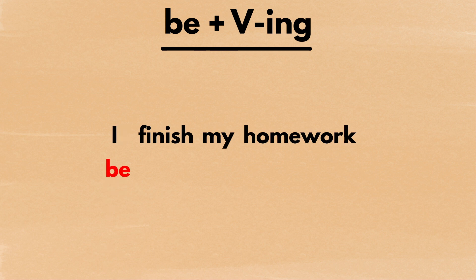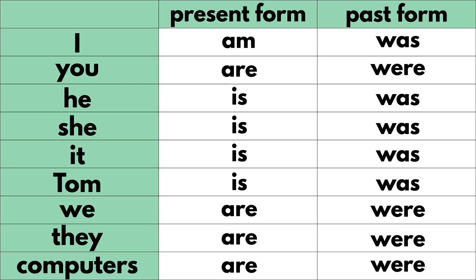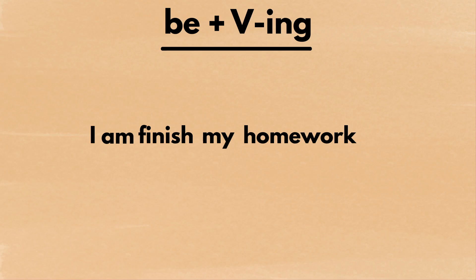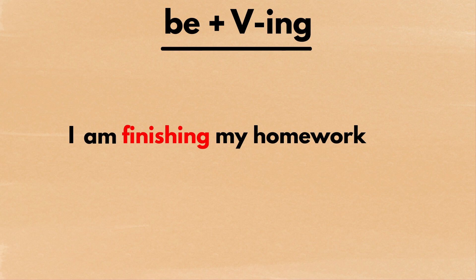For example, let's change the sentence I finished my homework into be plus ing form. First, insert be in front of the original verb finish. Next, change be's form according to your subject. Since the subject is I, change be into am. Refer to this chart if you are not sure how to change the verb be. Secondly, change the original verb finish into its ing form finishing.